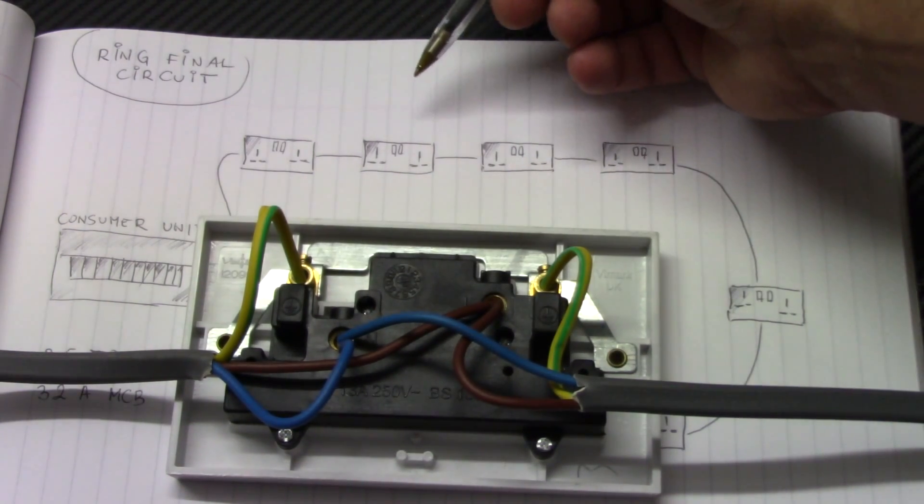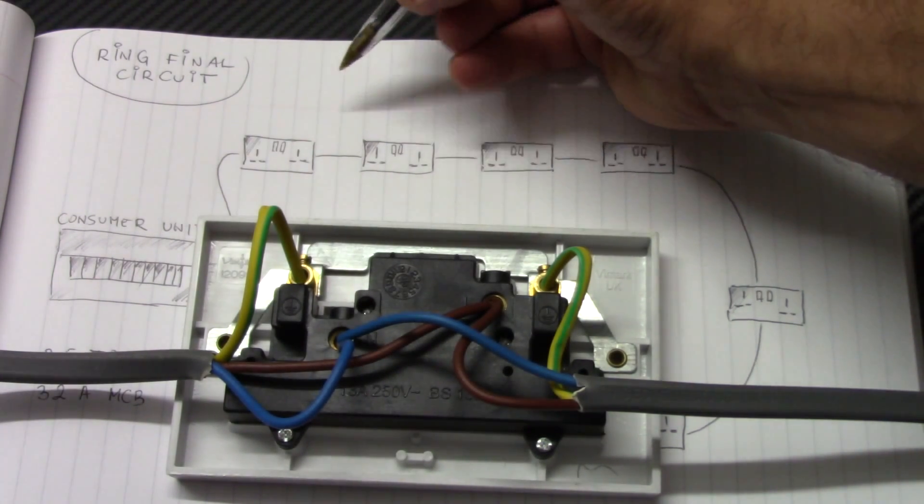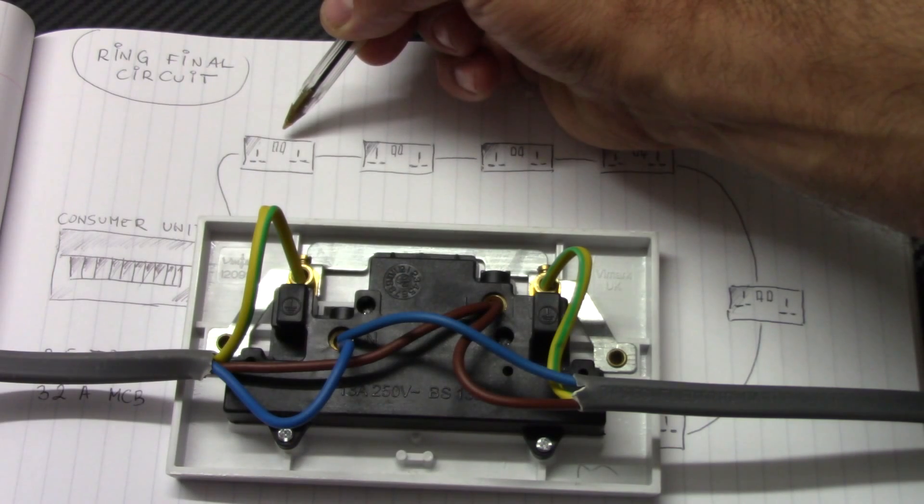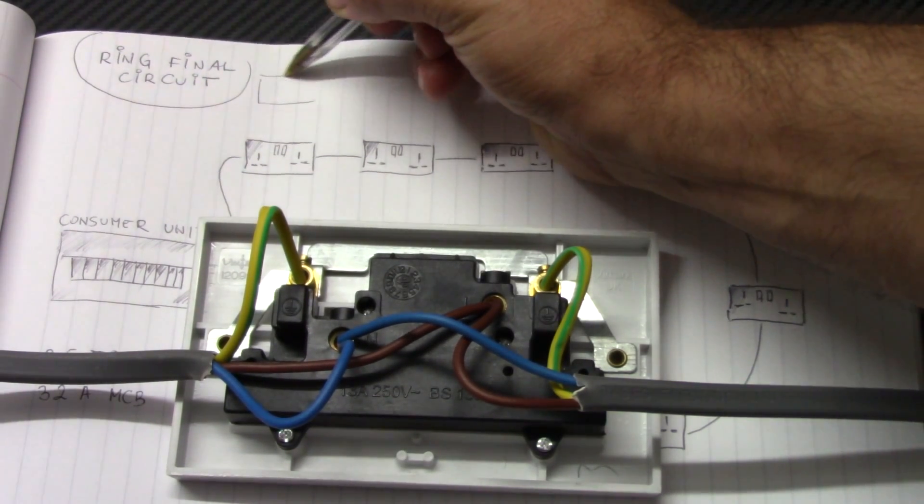So now let's say we want to add a spare socket to existing ring. There are two ways to add it. First, the easiest way is just to connect the new socket, which is going to be here, for example.